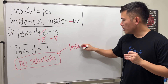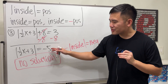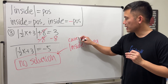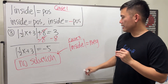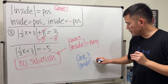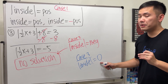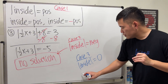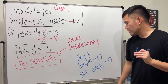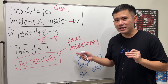To generalize: if you have an absolute value of an expression equal to a negative number, write 'no solution' — done. If you try to solve it you'll get two fake answers. There is also a case three: if the absolute value equals zero, just solve the inside equal to zero. You get only one answer, because positive zero and negative zero are the same.